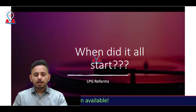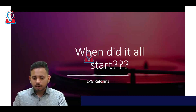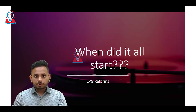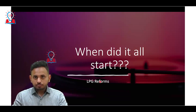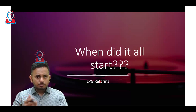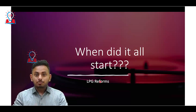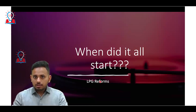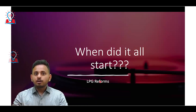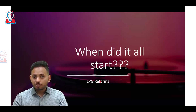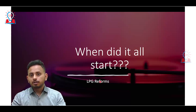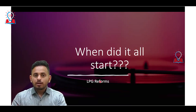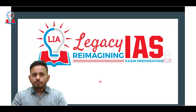Jobs being generated outside agriculture are mostly in construction, while manufacturing has been relegated to the fourth spot. This all started with the LPG reforms. Before 1991, the Indian economy was majorly dependent on agriculture. After the LPG reforms opened India to the world, the Indian economy shifted directly from agriculture to services, bypassing manufacturing entirely — which is how manufacturing was neglected over the last 25 to 30 years.